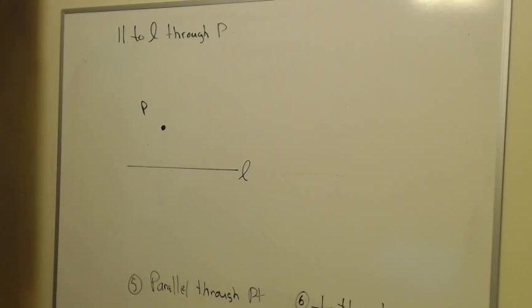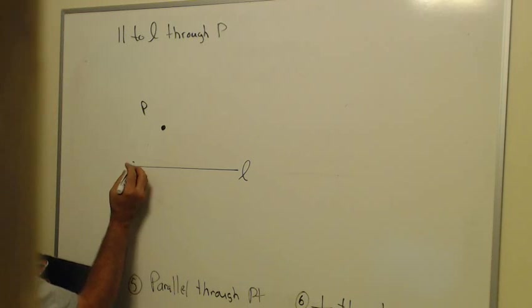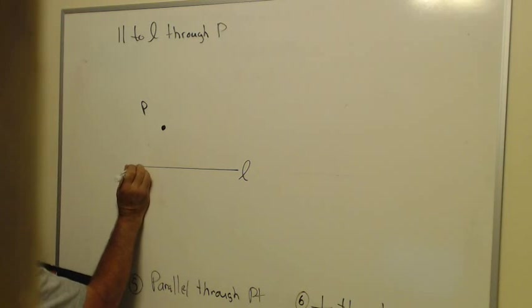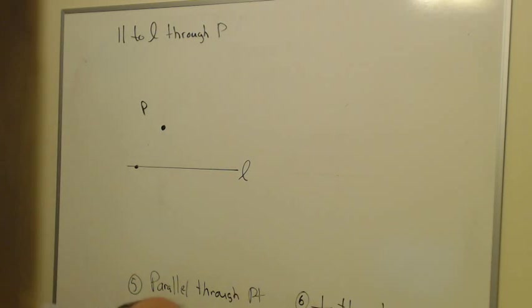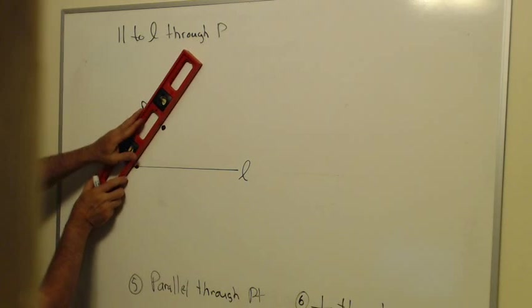And all this is, this is the angle construction, the copying an angle construction again. So what I'm going to do is make an angle by choosing a point on L. It doesn't matter exactly where I choose it. I think last time I chose it at the very end, but you don't have to. Now I'm going to draw this angle.